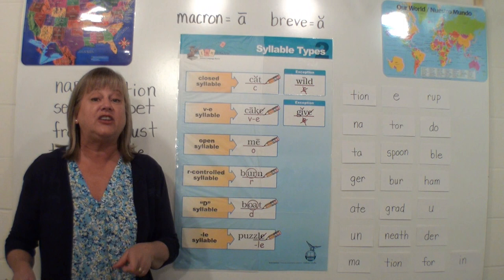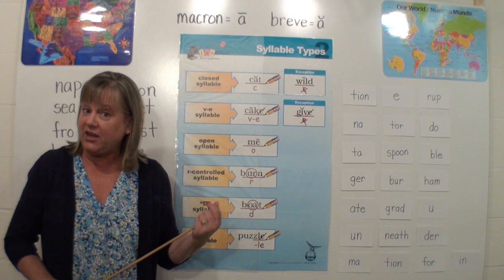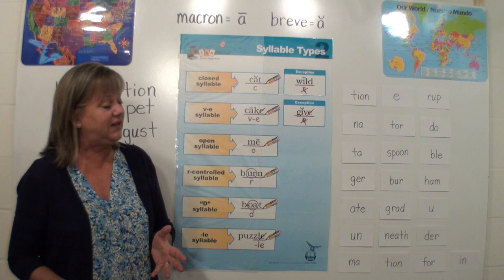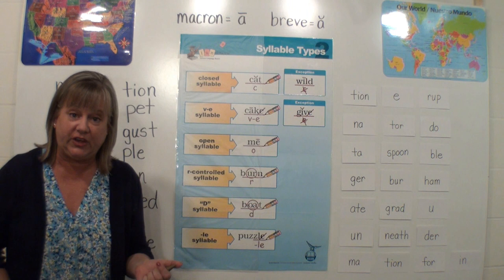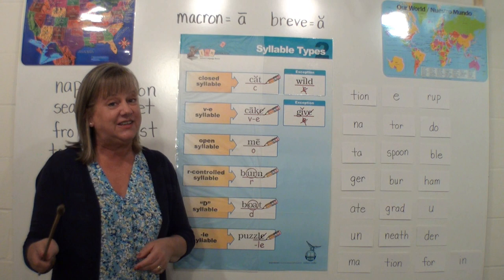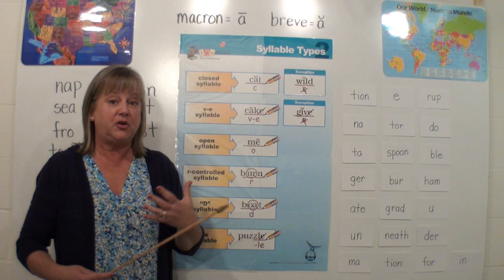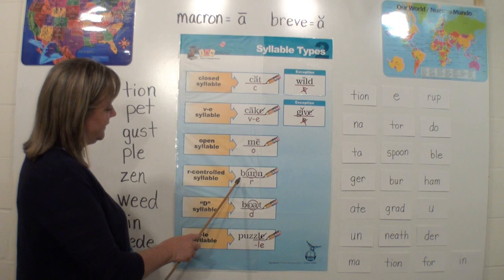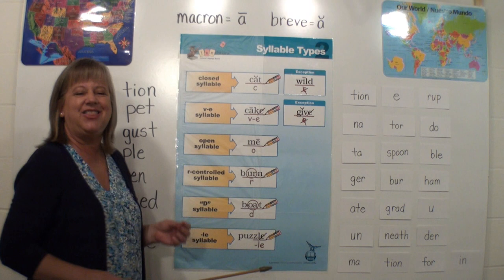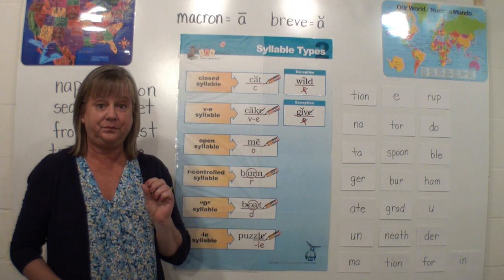Our r-controlled syllable — or we can call it bossy R — is when we have one vowel and an R follows it. Here's our example: the word "burn." It's not a long vowel sound, it's not a short vowel sound — we do not use the macron or the breve. It's just circled because the U-R together is saying 'er.' It all goes together; it all comes together for reading and for spelling.